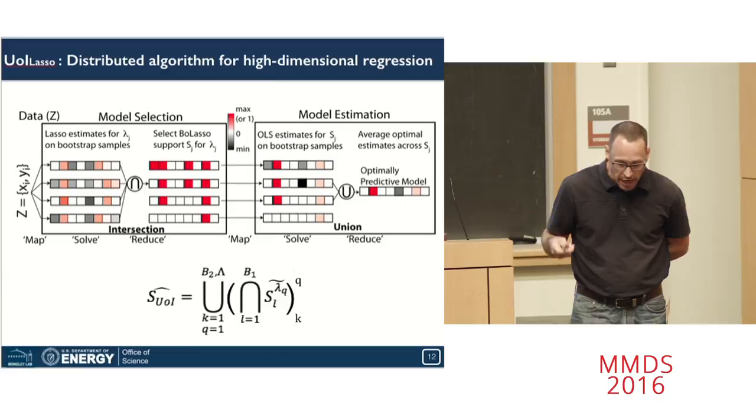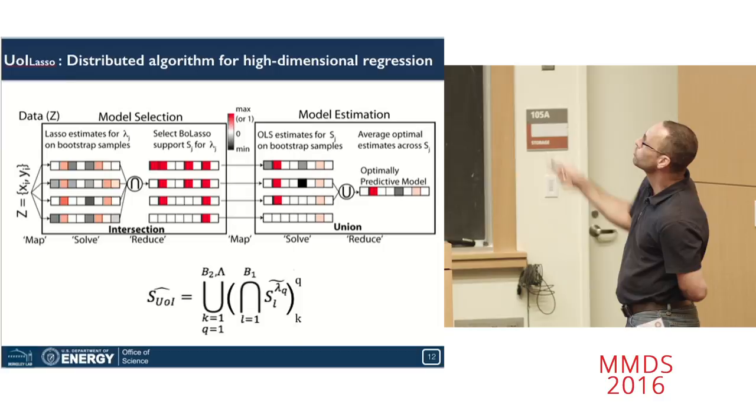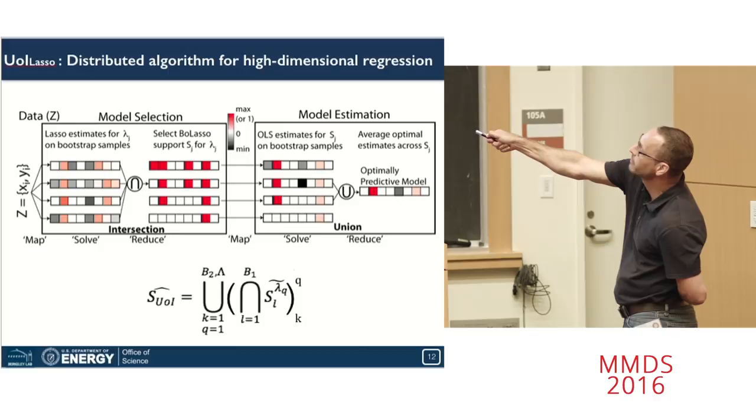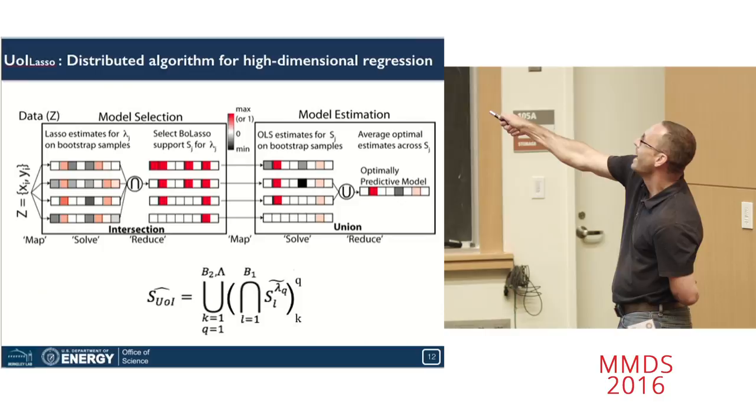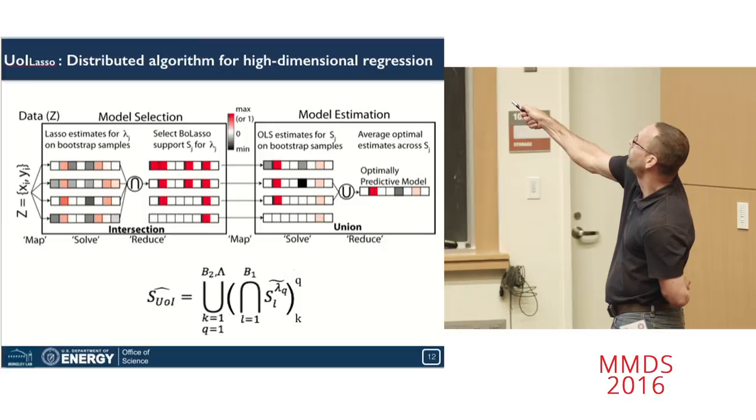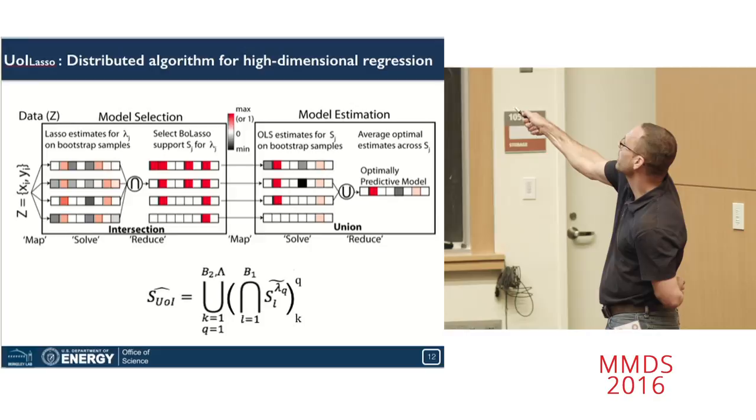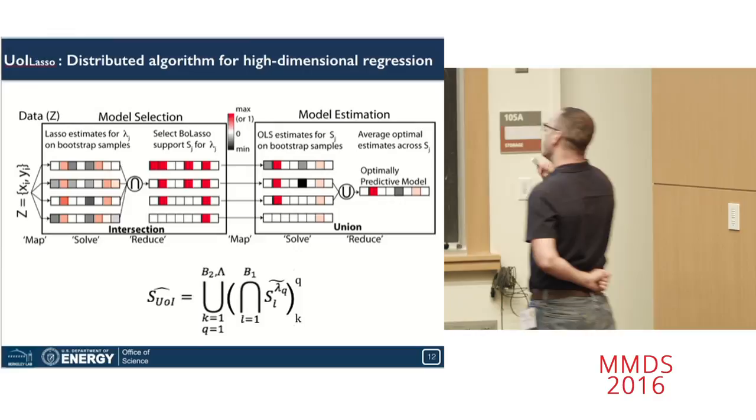As one might imagine, there is a lot of natural parallelization in these algorithms. We can map our data across bootstrap samples and hyperparameter values, solve a given convex authorization problem, reduce it to an intersection operation, giving us our family of potential model supports, estimate the values of the bootstrap sample looking just with OLS, combine them to a union operation, a bagging, and this gives us our optimal model prediction, our optimal model.